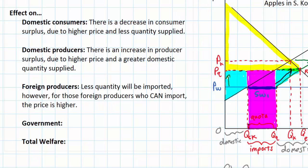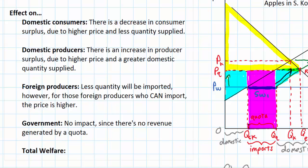What about the government? There is actually no area of government welfare on this graph because the quota, unlike a tariff, does not create any government revenue. This could be used to evaluate the wisdom of using quotas versus tariffs on an exam. Tariffs have a similar effect — consumer surplus is reduced while producer surplus is increased — but tariffs also create government tax revenue which could be used to improve infrastructure, build schools, and provide health care. A quota creates no such revenue, so it might be less desirable than a tariff if a government must use protectionism.